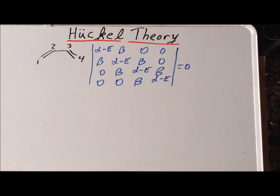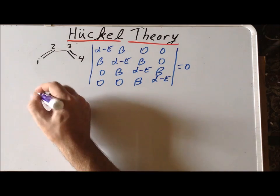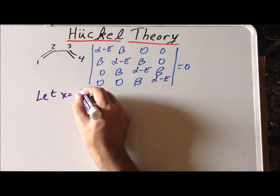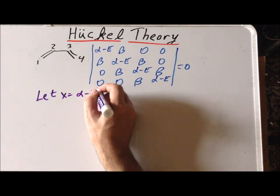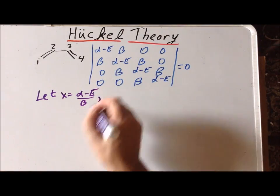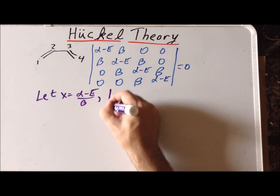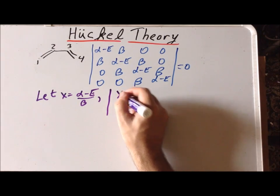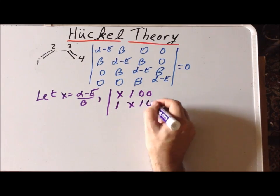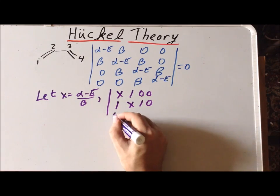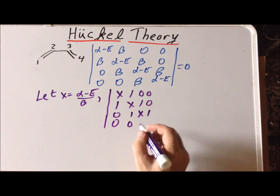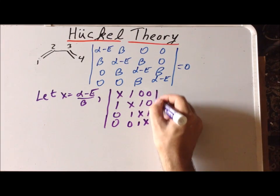Again, as before, we are going to make the substitution that x is going to be equal to this expression, alpha minus the energy divided by beta. And if we do that, this transforms this particular determinant equation into the following: x, 1, 0, 0; 1, x, 1, 0; 0, 1, x, 1; 0, 0, 1, x, all equal to 0.